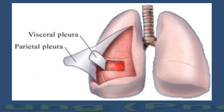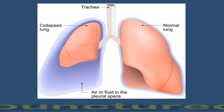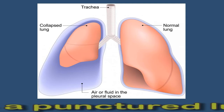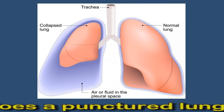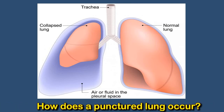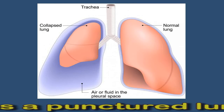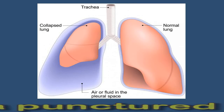When air collects in the pleural space outside of the lung, it has nowhere else to go. The air puts pressure on the lung, preventing proper expansion and causing it to collapse. The size of a pneumothorax can vary, with only a small portion of the lung collapsing in some cases.